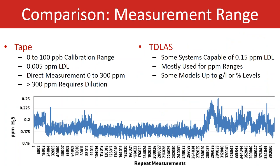In terms of measurement ranges, tape is really good for ultra-low measurements, such as 0.1 ppm or 100 ppb, with a lower detection limit of about 0.005 ppm or 5 ppb. Tape can also directly measure H2S up to approximately 300 ppm, and higher concentrations can be measured with dilution. For TDL, it's generally used for ppm ranges like 0 to 10 ppm H2S, with an LDL of about 0.15 ppm — very low, but still slightly higher than tape. However, some percent-level ranges can be offered with TDL as well.